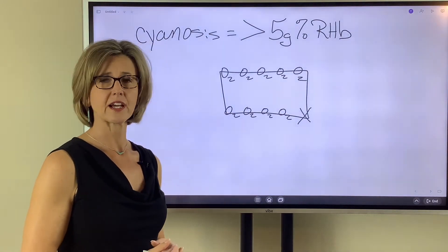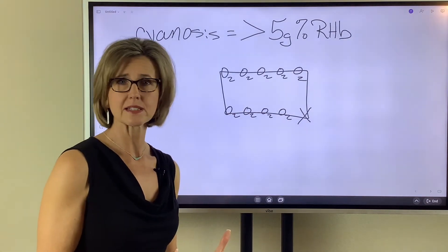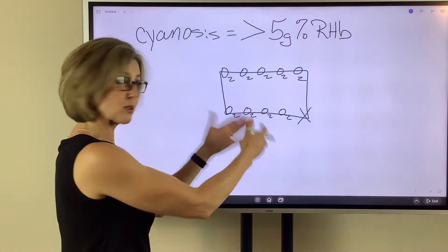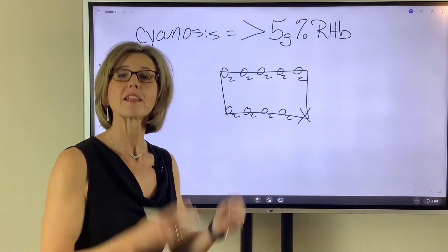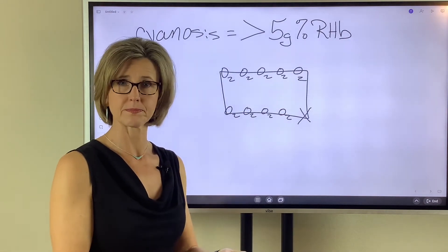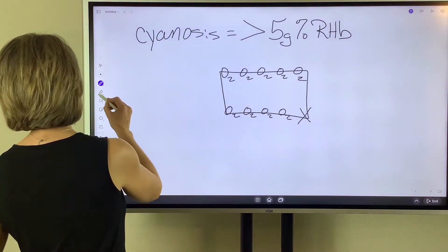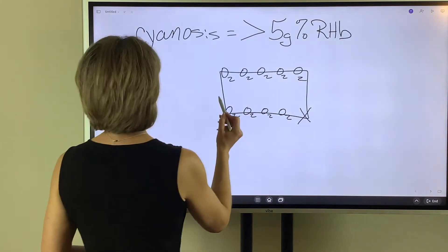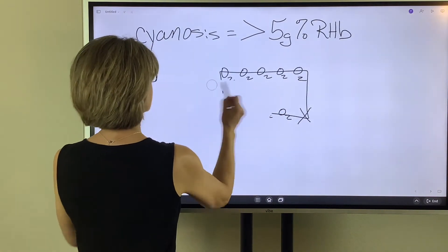Carbon monoxide is not attached to it. Methemoglobin isn't attached to it. It's just absolutely nothing's attached to it. That's reduced hemoglobin. All right, that being said, let's apply this to this definition now.